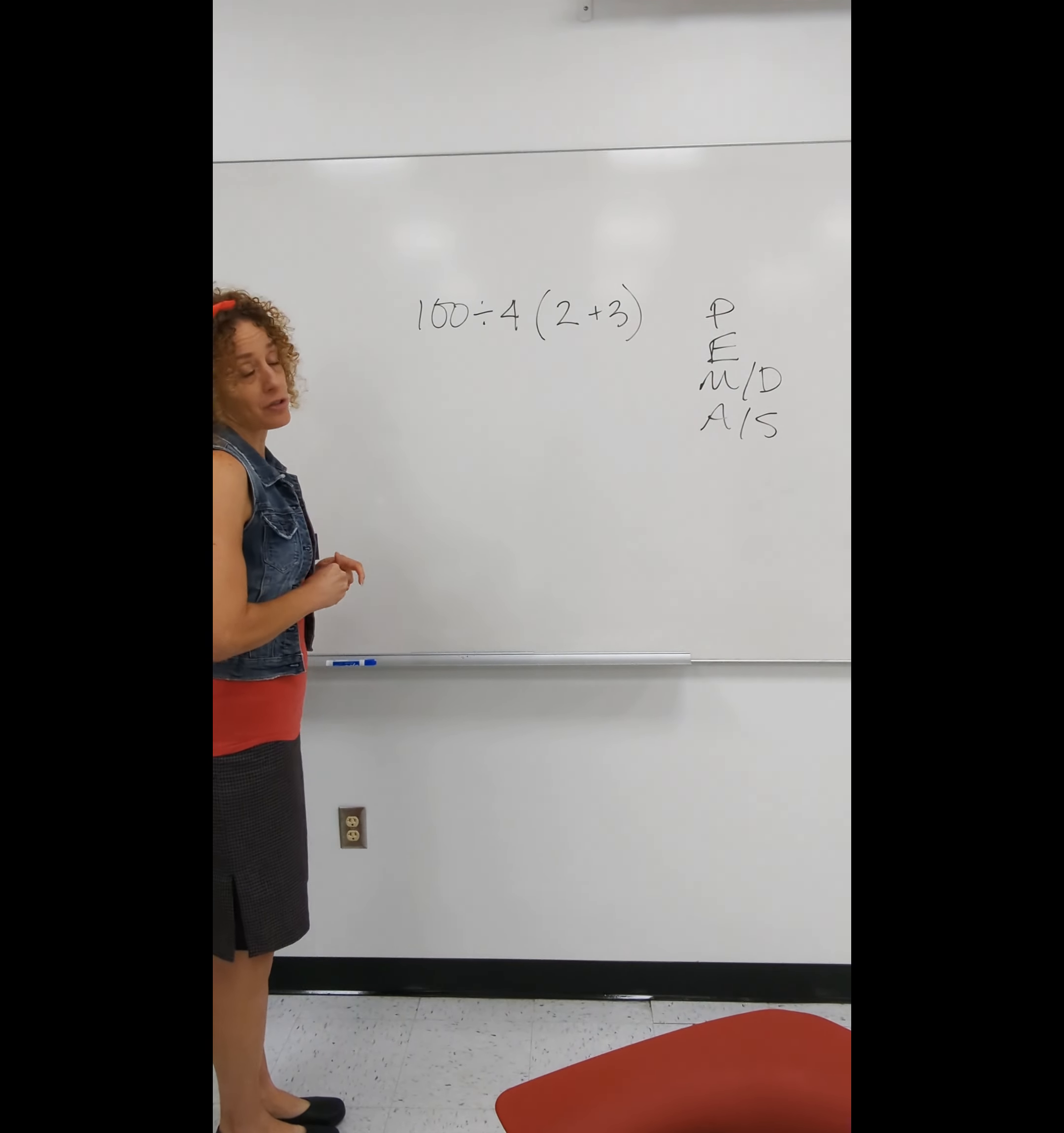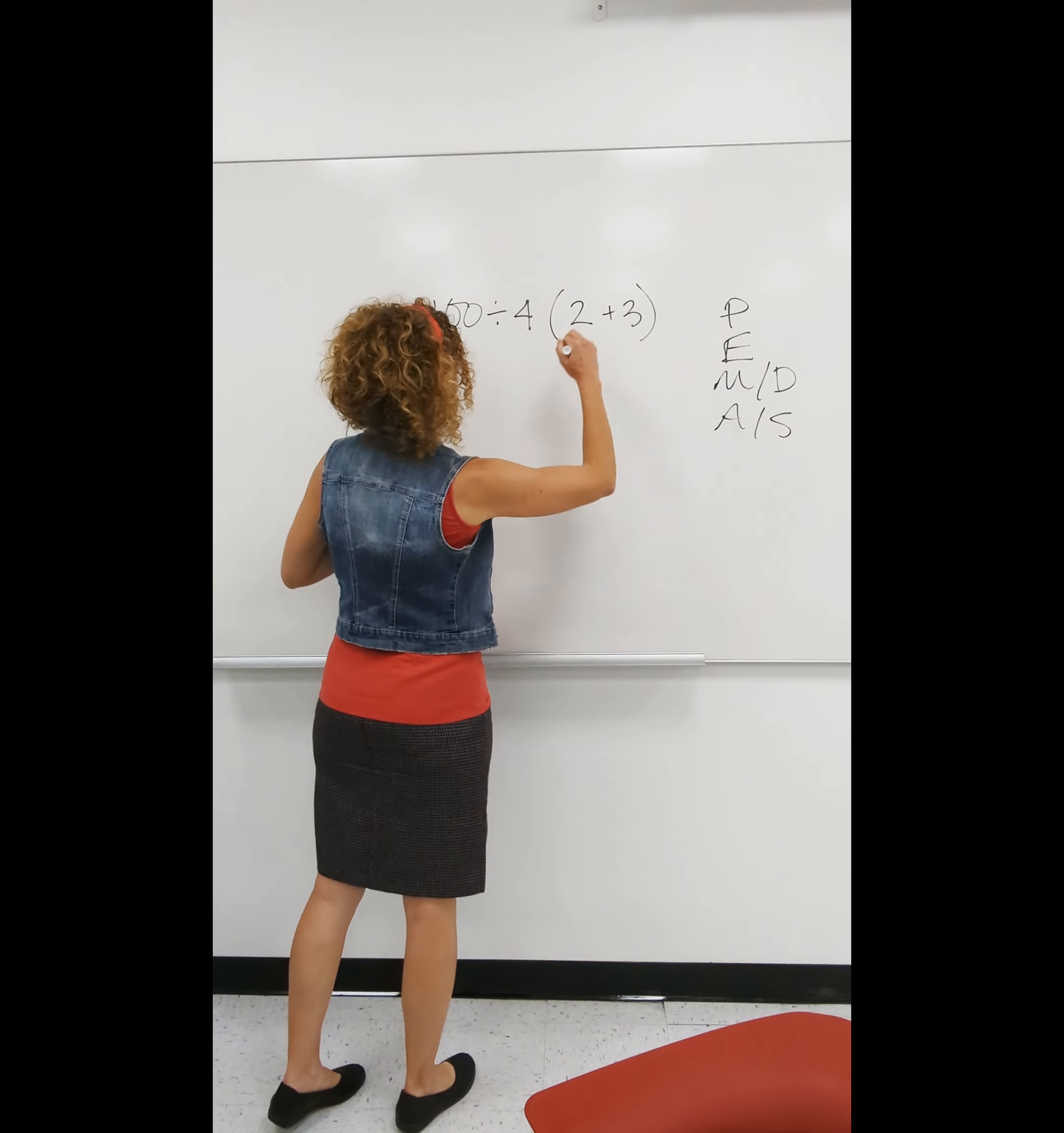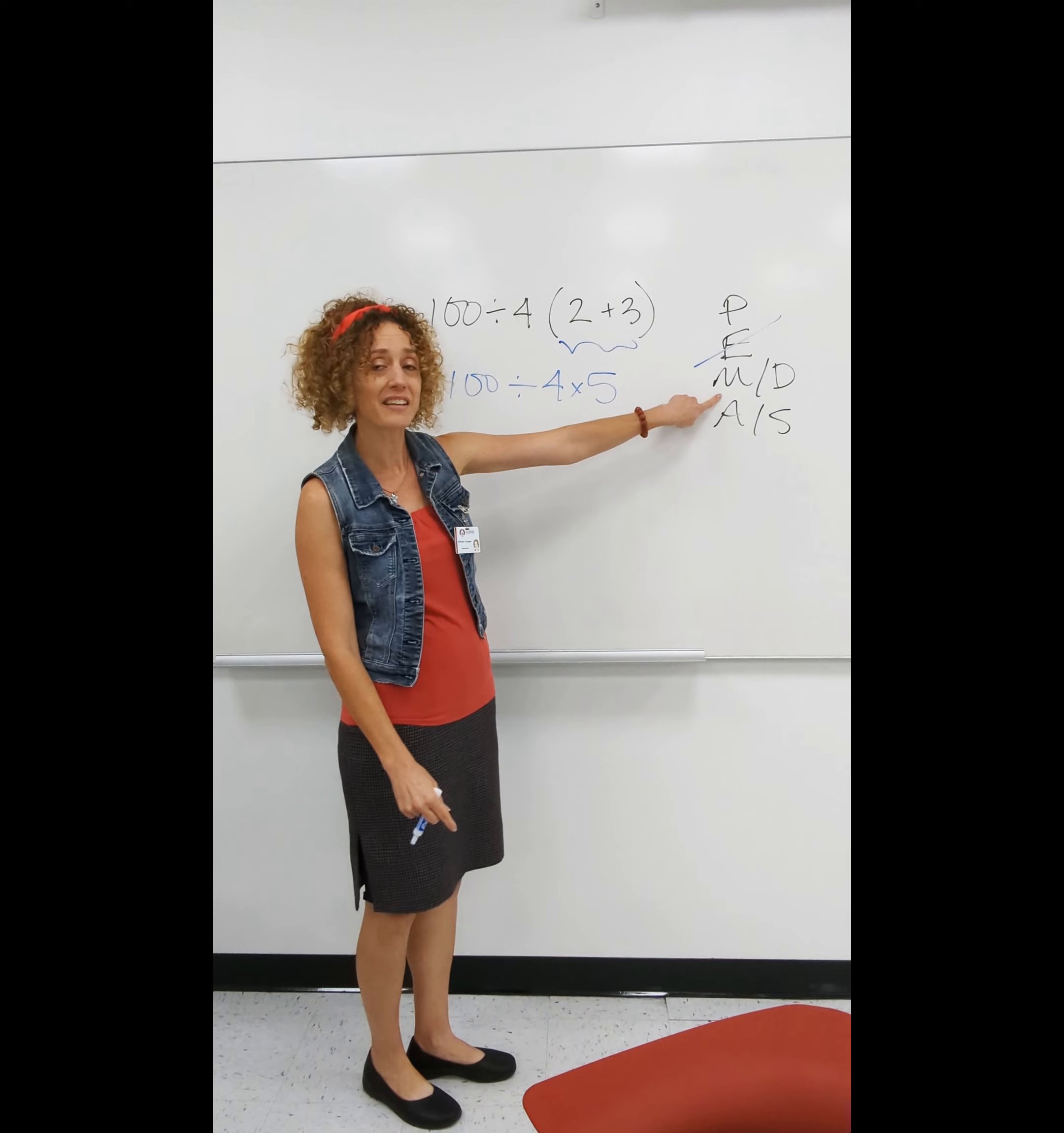Now Aunt Sally had her order of operations wrong. We'll excuse her, but we're going to make sure we get it right. Remember that exponents are stronger than multiplying or dividing, which is stronger than adding or subtracting. And parentheses kind of trump it all, so you want to do those first in that order. So what do we do first here?